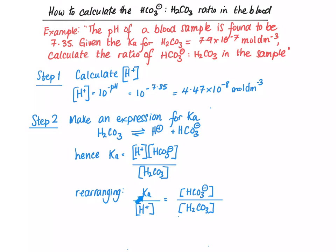When we rearrange this, we get Ka divided by H+ is HCO3- divided by H2CO3. And that's what the question is asking up here.